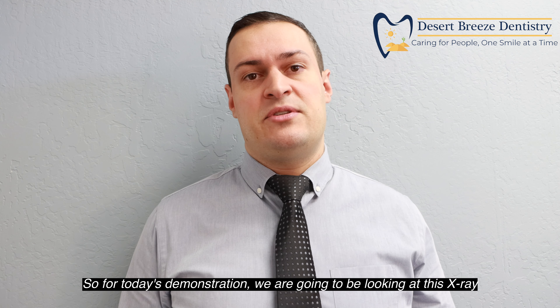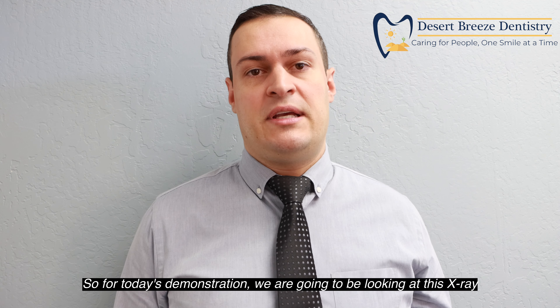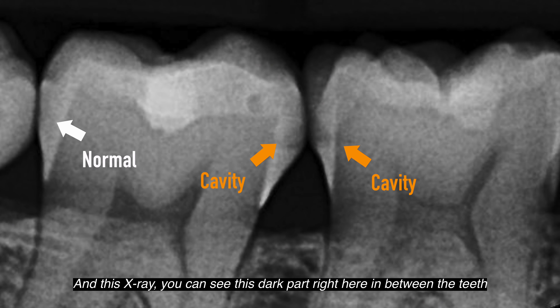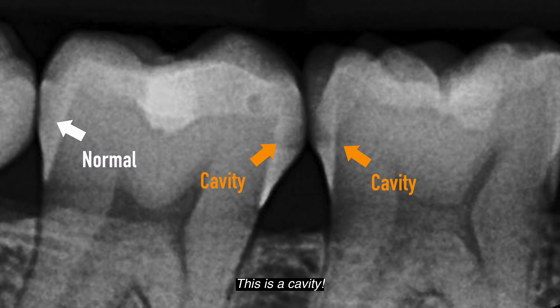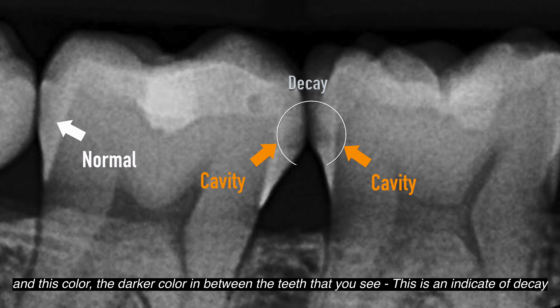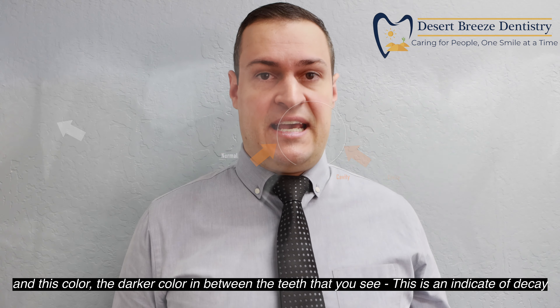For today's demonstration, we are going to be looking at this x-ray. You could see this darker part right here in between the teeth — this is a cavity. The harder part of the tooth shows us the normal colors, and this darker color in between the teeth is indicative of decay.